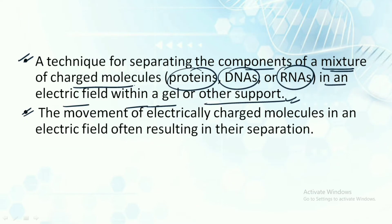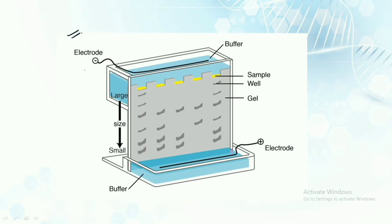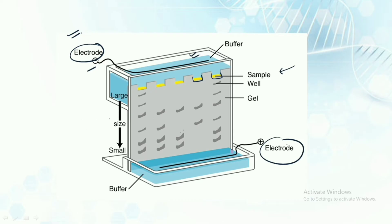At the end of the process we switch off the electric current and find that towards the well we have the larger fragments, and towards the other pole we have the smaller fragments. The movement of electrically charged molecules in the electric field results in their separation. In the apparatus we have the electrodes — negative and positive — the buffer solution, the sample loaded onto the wells, and the gel. After electricity is switched on, molecules get separated out, with larger molecules towards the well and smaller molecules towards the opposite pole.